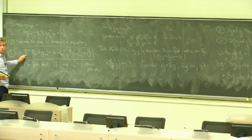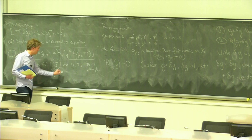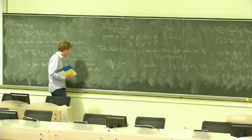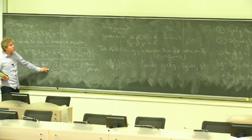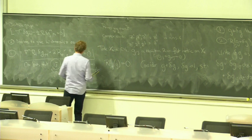One finds two classes of solutions to the Lichnerowicz equation. Class one: deformations delta G_{i j-bar}. Class two: deformations delta G_{ij} and their conjugates. With regard to the first class, such deformations automatically fulfill the condition that the metric is Kähler. The second type don't.